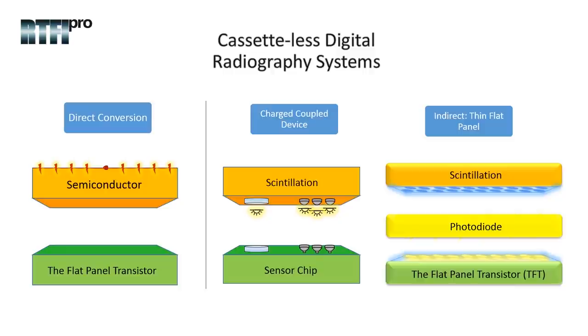In summary, indirect radiography uses a scintillator to convert x-rays into light first and a photon detector converts light into electrons. This method uses amorphous silicon. Direct radiography does not use scintillators as x-ray photons are directly converted into electrons. This method uses amorphous selenium.